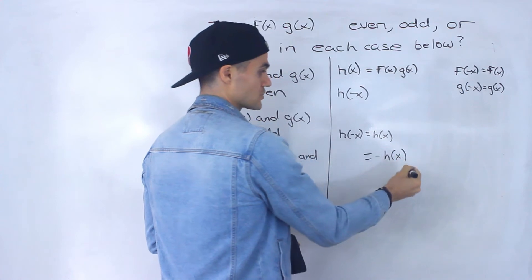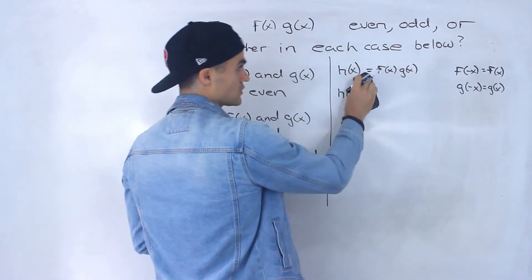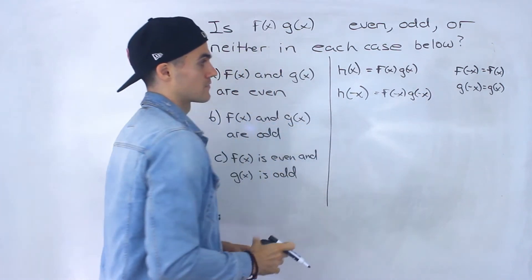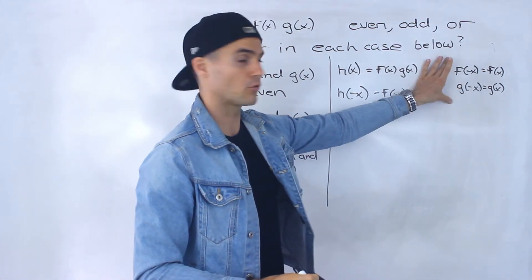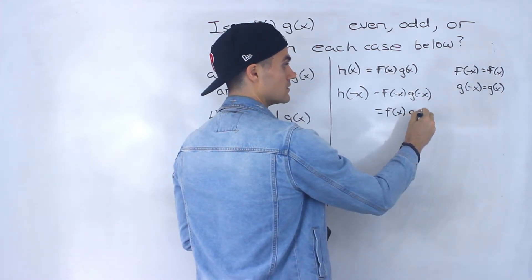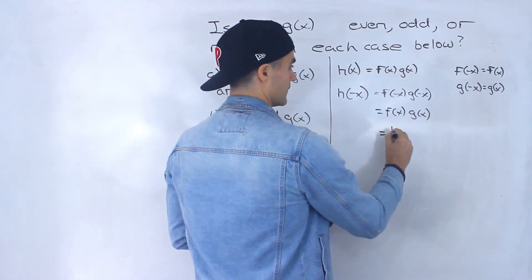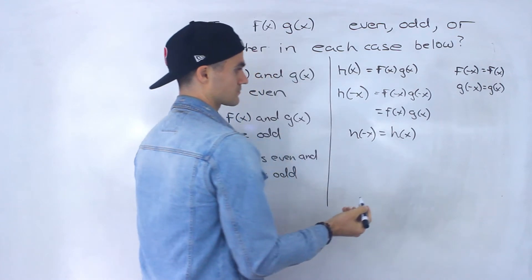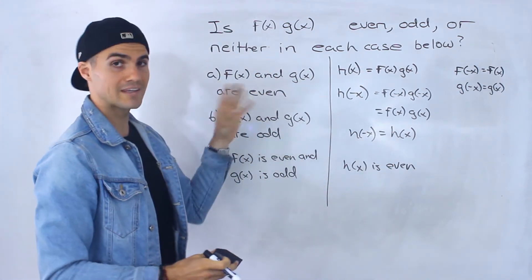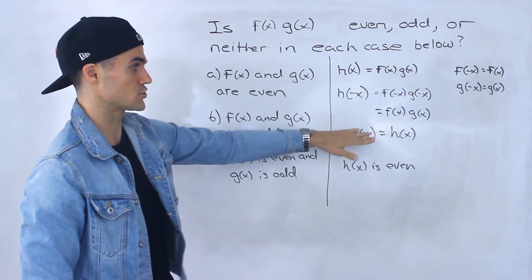If we can get h(-x) equal to negative h(x), it's odd, and if neither, it's neither. So h(-x) = f(-x) · g(-x). Because f and g are both even, f(-x) = f(x) and g(-x) = g(x). So we get f(x) · g(x), which is just h(x). We've proved h(-x) = h(x), so h(x) is even. Multiplying two even functions gives an even function.